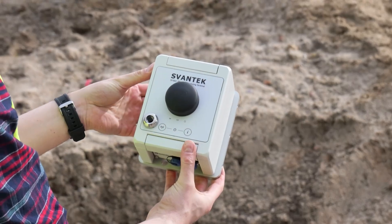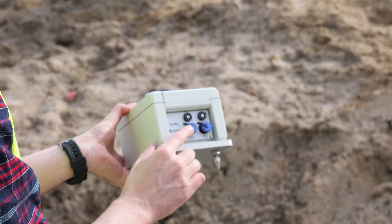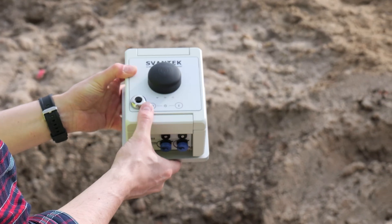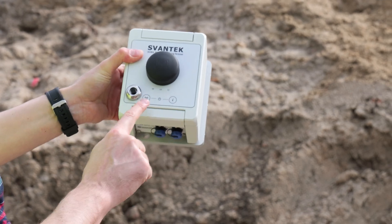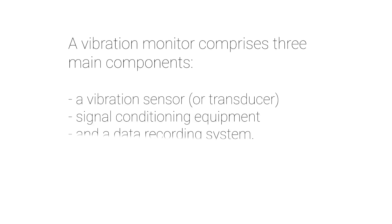A vibration monitor is a specialized measurement instrument designed to meet relevant standards for evaluating, diagnosing, and monitoring vibrations. It comprises three main components: a vibration sensor or transducer, signal conditioning equipment, and a data recording system.